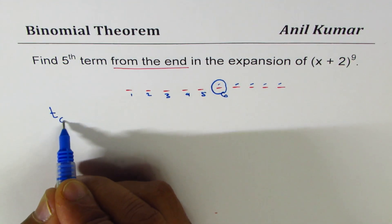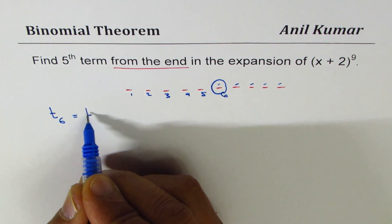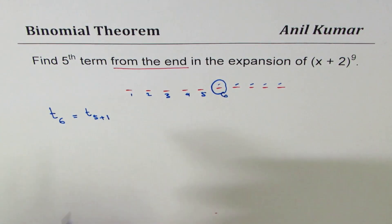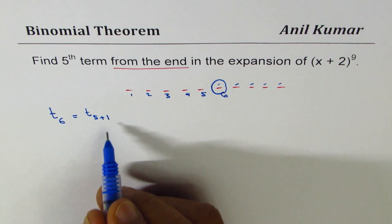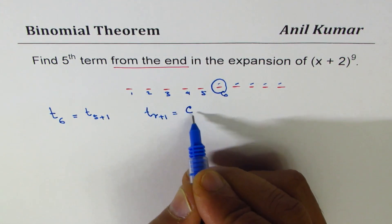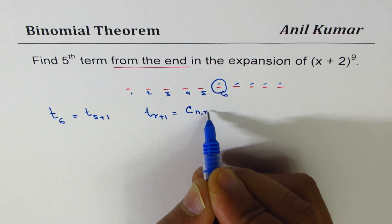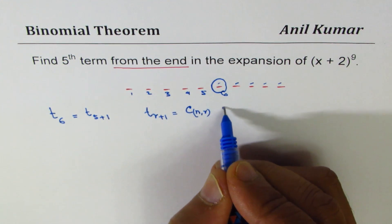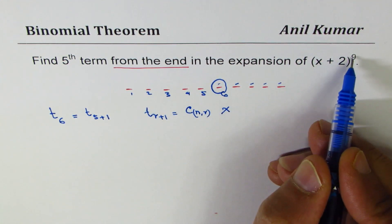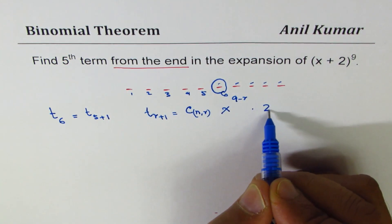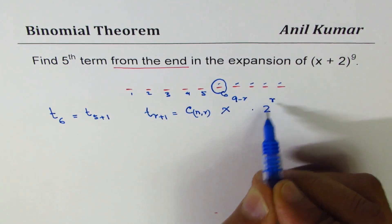We want the sixth term. Sixth term will be t_(5+1). So general formula as you know is based on t_(r+1). t_(r+1) is C(n,r) times x to the power of (n-r) times 2 to the power of r. That will be the general formula.